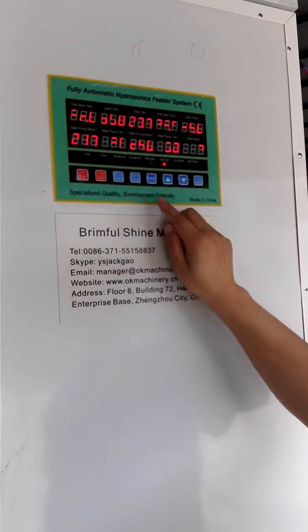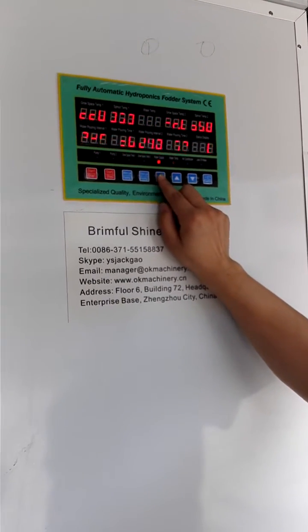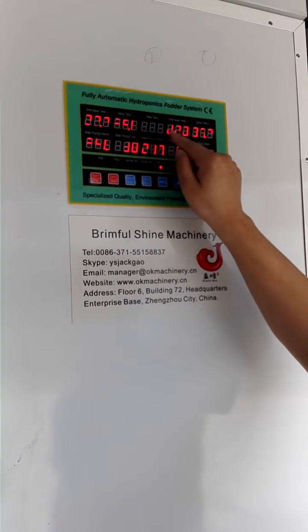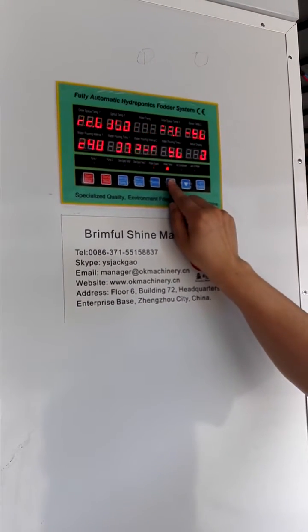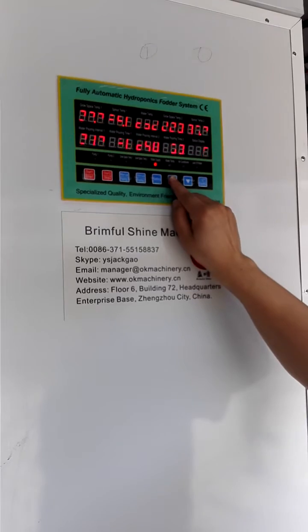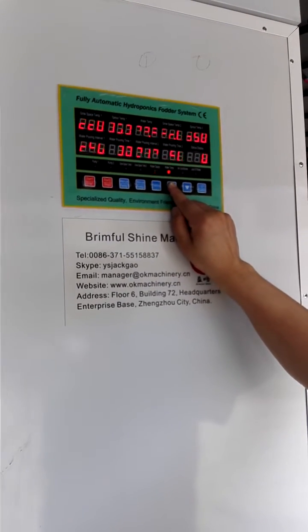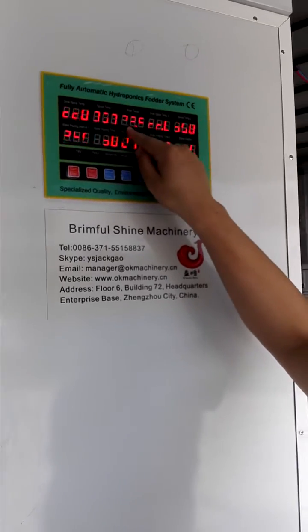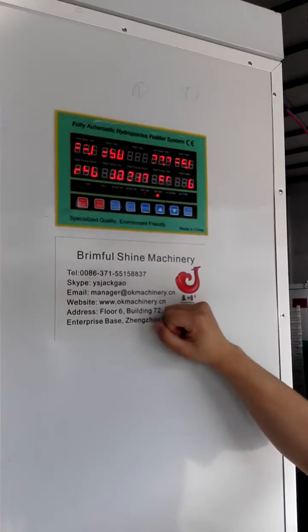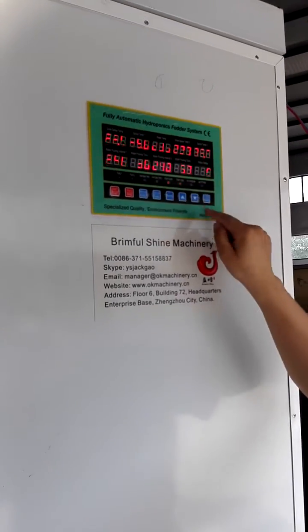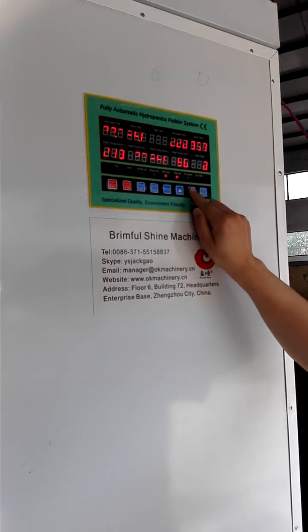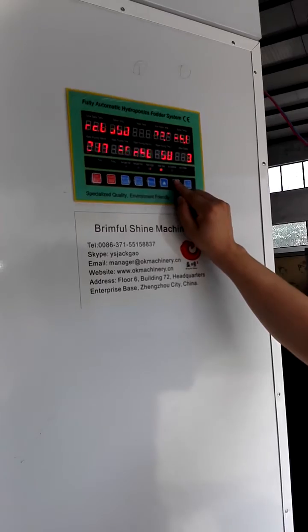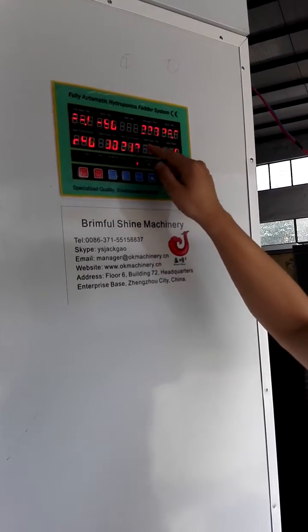Next, we can add to increase the water temperature. Now it is 23.5. We make it down by pressing the decrease button. Now it is 23.